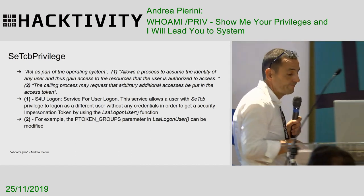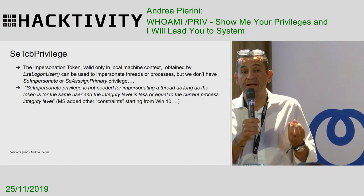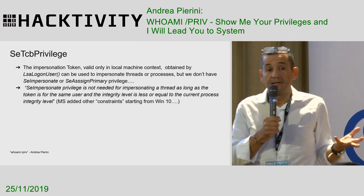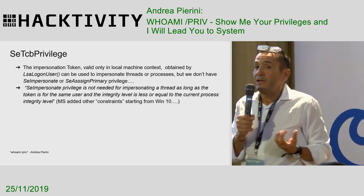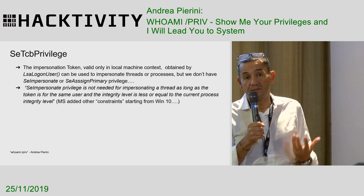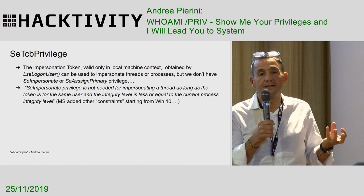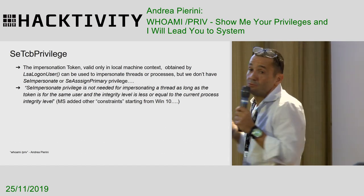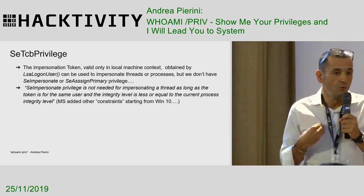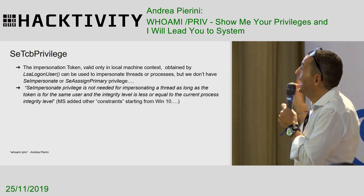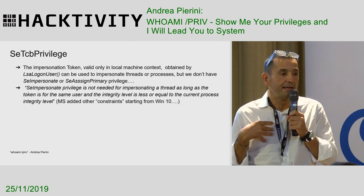LSA LogonUser gives me back my powerful token. But we have a problem: I have this token and I would like to spawn a process or thread using it. In order to impersonate the thread, I need the impersonate privilege — but if I only have TCB privilege, in theory I could not impersonate the thread. However, there is good news: impersonate privilege is not needed as long as the token is for you, and the integrity level of the process you want to spawn is less than or equal to your integrity level as the parent process. But Microsoft starting from Windows 10 added more constraints.